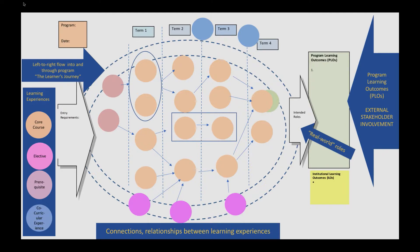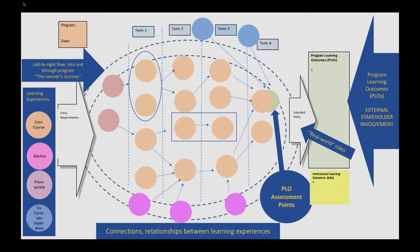This shows that we want to see a connection between each course and something else in the program. Every learning experience that we've said needs to be in the program should have a relationship to something in the program. The last connections shown are between the co-curricular experiences and something else in the program — both pointed toward that green crescent, which is the program learning outcome assessment points.